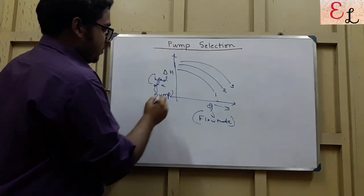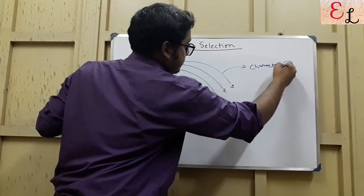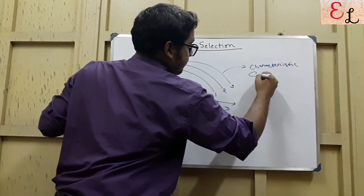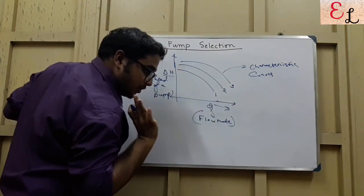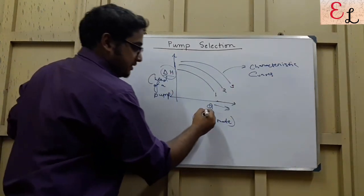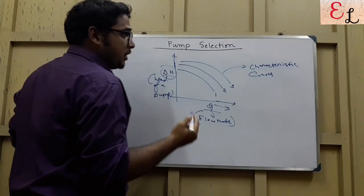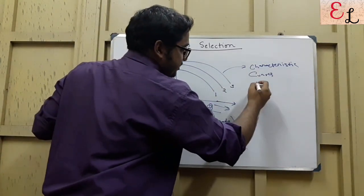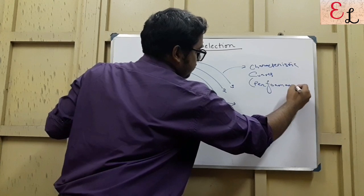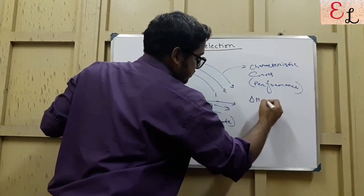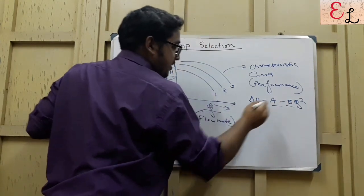How does this relationship come from? These are called the characteristic curves. What does this signify? It is the head developed by a pump, the discharge head developed by the pump, given by delta H and how it varies at different flow rates. So this is the characteristic curve, also known as the performance curve. The performance curve has a relation of delta H equals A minus B Q square.